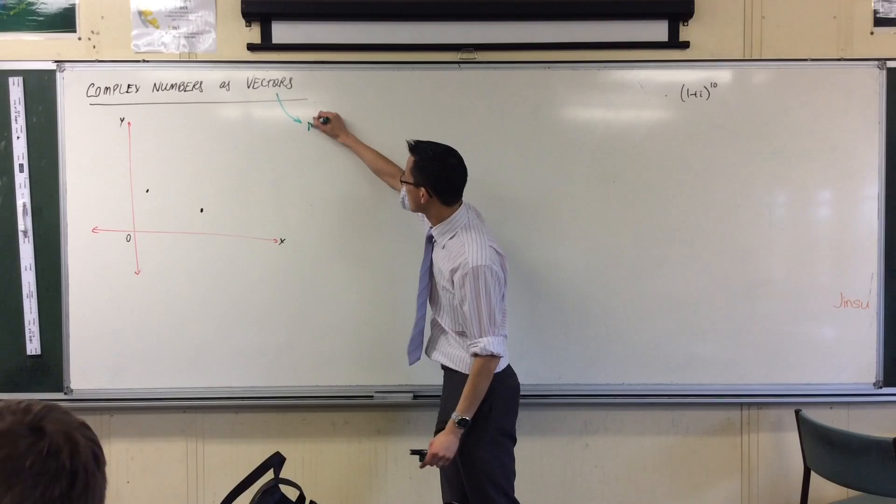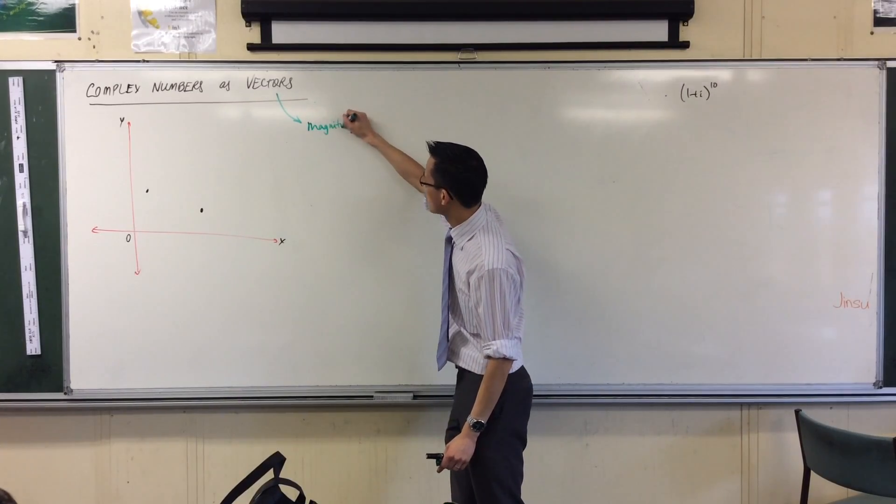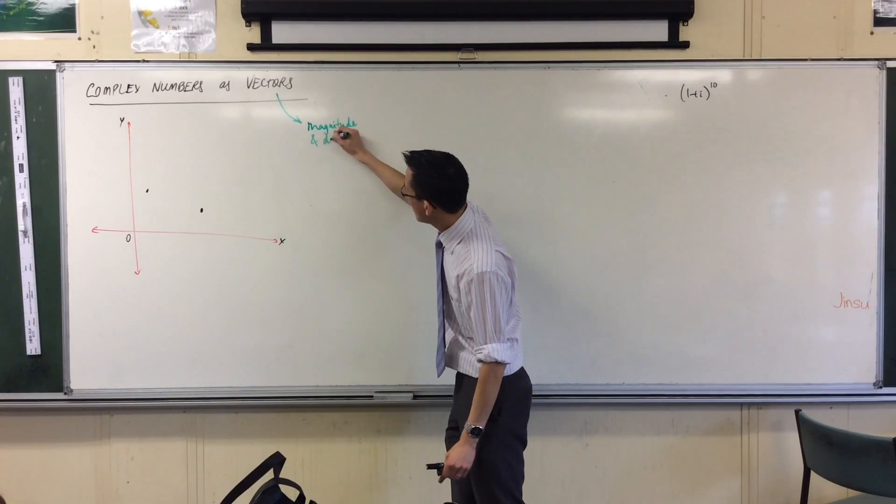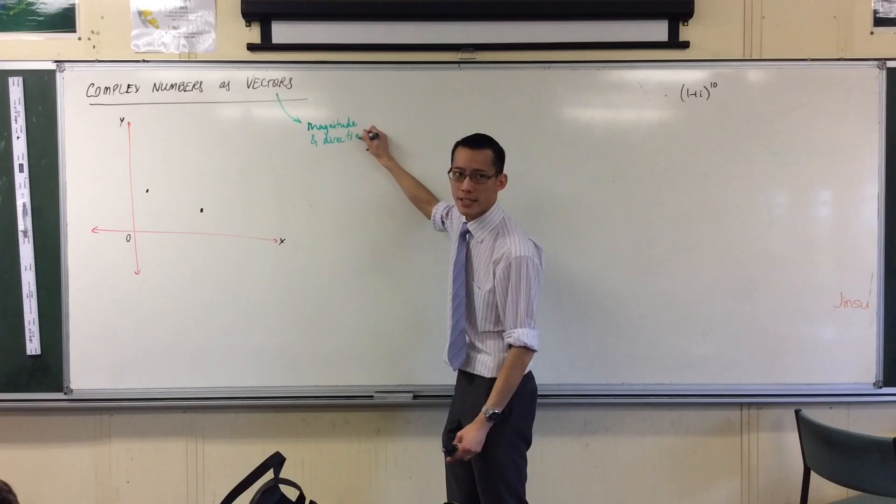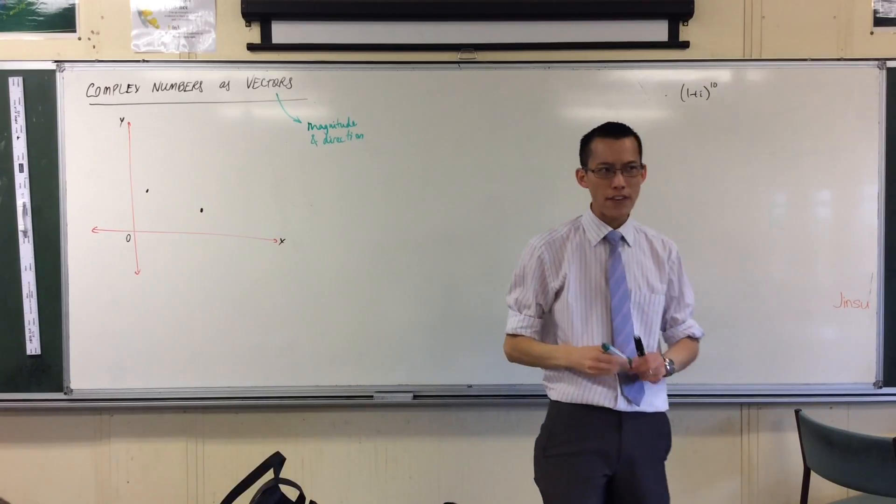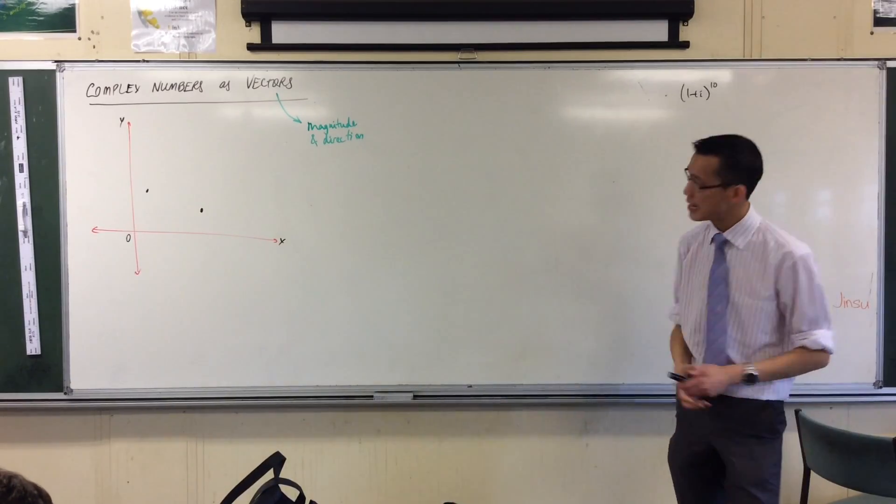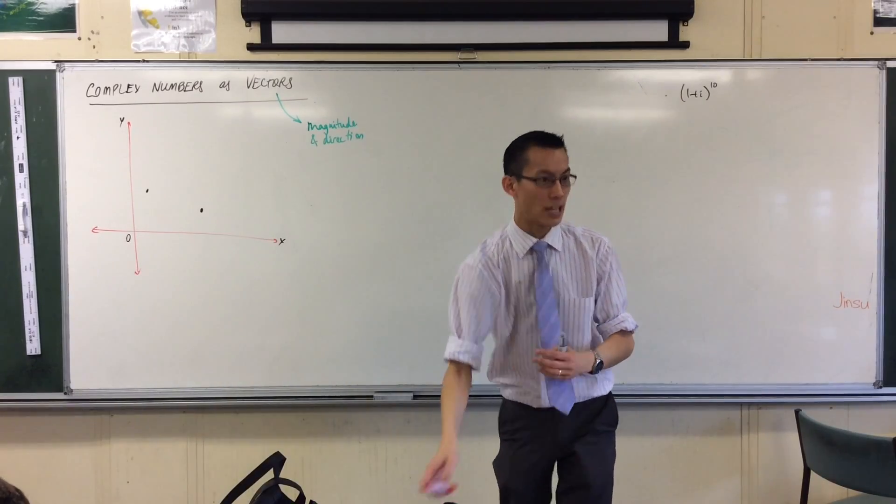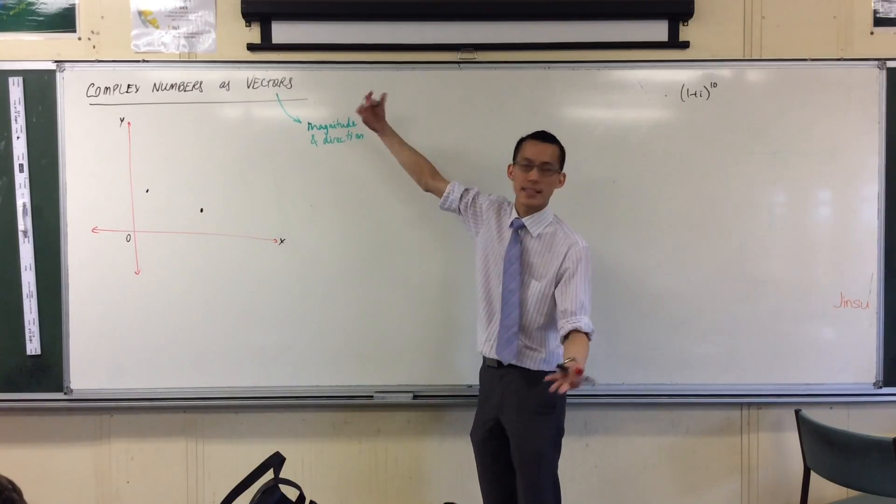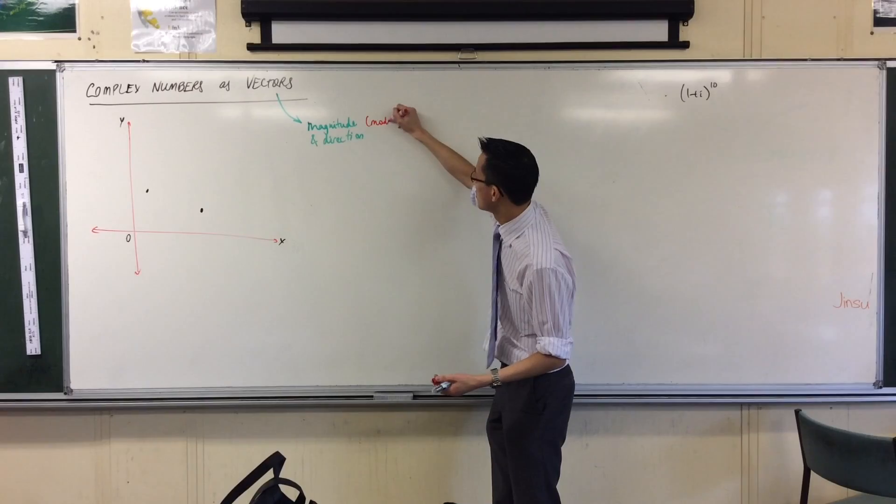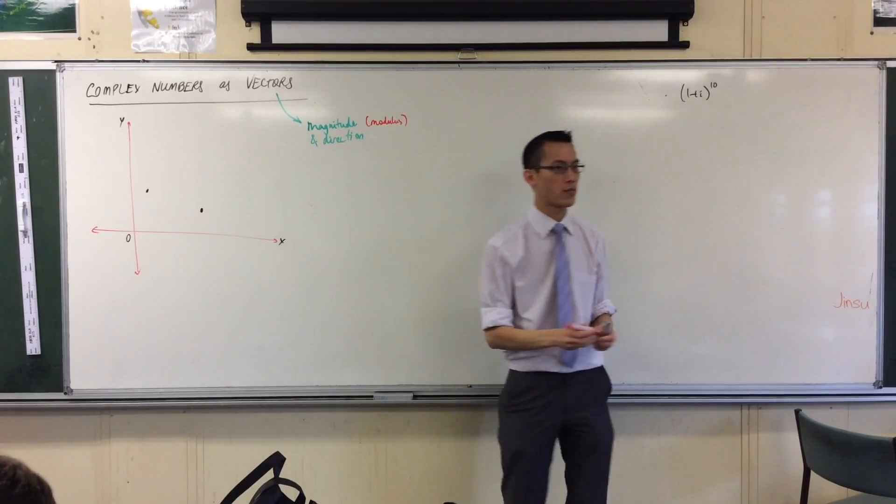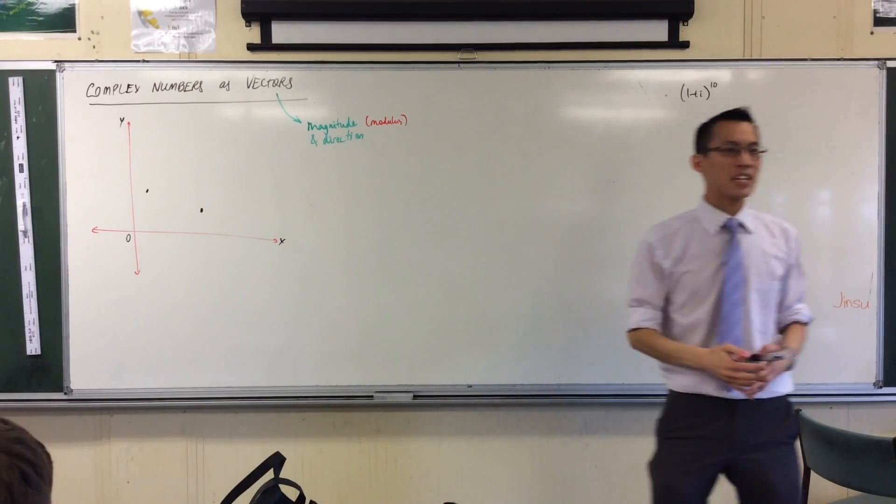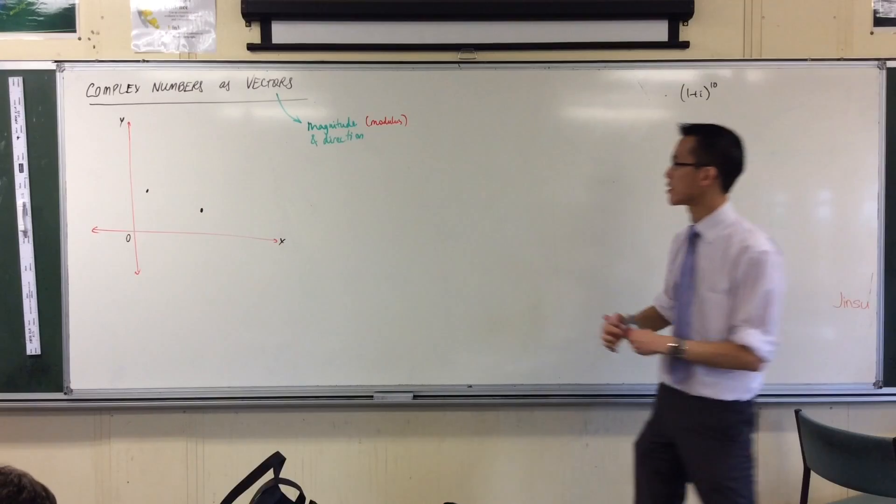This idea that we're about to write down—magnitude and direction—is very, very similar. It almost feels like the same thing. Magnitude, what that corresponds to, is very similar to this idea of modulus. It's like, how big is this number? Modulus. And direction, clearly, is what arguments and angles are about.